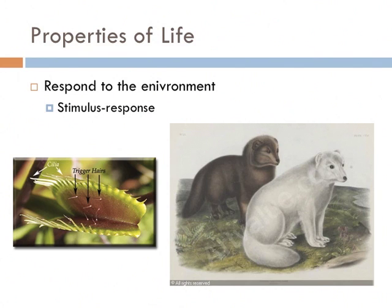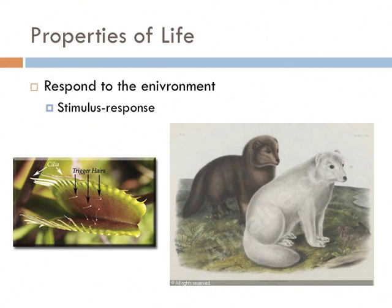Another property of life is that life responds to the environment in a process known as stimulus response. The stimulus in the Venus flytrap is caused by trigger hairs. You can't just flick one trigger hair and cause it to close — it requires either one trigger hair to be hit twice, or two different trigger hairs hit simultaneously in order for the Venus flytrap to close. There's also stimulus response in animals. Here we have an arctic fox that is either brown in the summer or white in the winter for camouflage — it produces different colored fur based on the season.